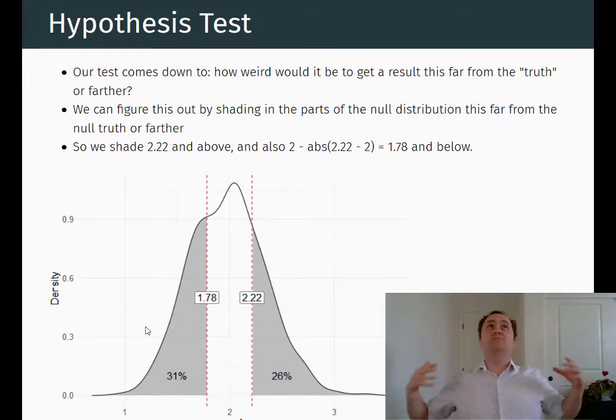So if I could say there's more than a half chance I would get something this far away from 2, even if 2 is the actual true value, I'm not very likely to say then 2 must be wrong, right? Because 2 could be correct. And there's a half chance that I would get what I got, even if 2 is correct.